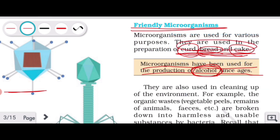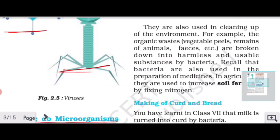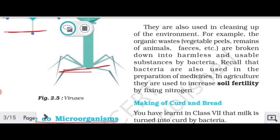Microorganisms are also used in cleaning up the environment. For example, organic waste such as vegetable peels, remains of animals, excreta, etc. are broken down into harmless and usable substances by bacteria. Microorganisms act on all these waste materials and convert them into useful products like compost, which farmers and gardeners can use.